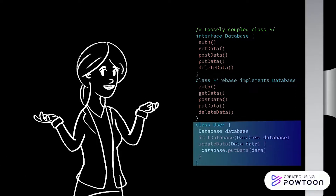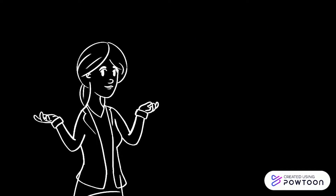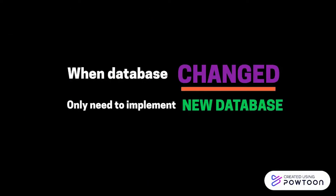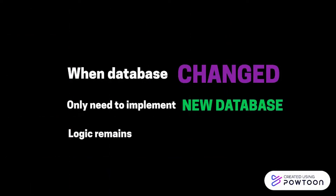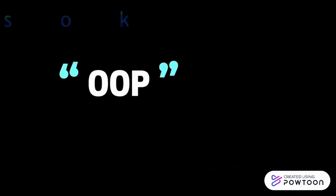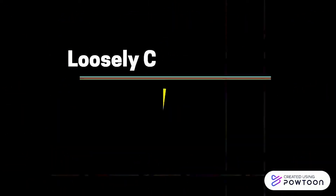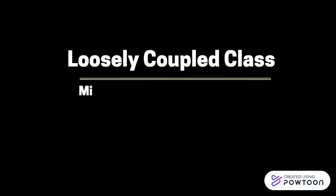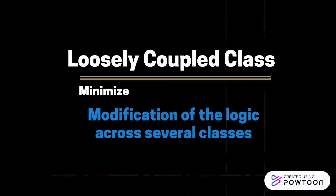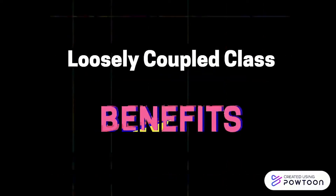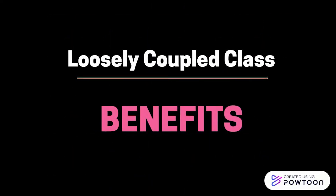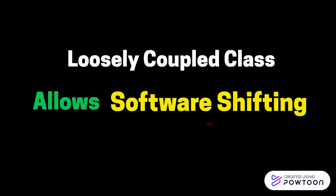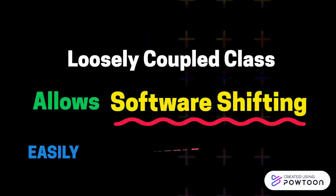On the other hand, loosely coupled classes separate the logical part of the database into an interface and implement specific databases accordingly. The user class also accepts the database as specified. This way, when the database must be changed, we only need to implement a new database and that's it. The logic in the interface and the user class remain the same. In object-oriented programming, loosely coupled classes are preferred because they minimize the need to modify logic across several classes. This benefit is especially seen in database and cloud provider design, allowing software to switch its database and cloud provider easily and seamlessly.